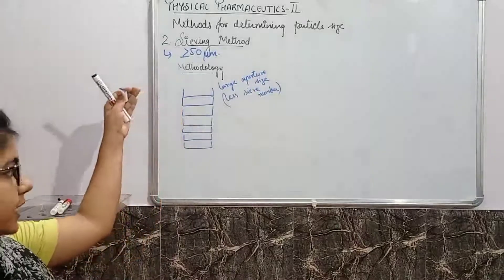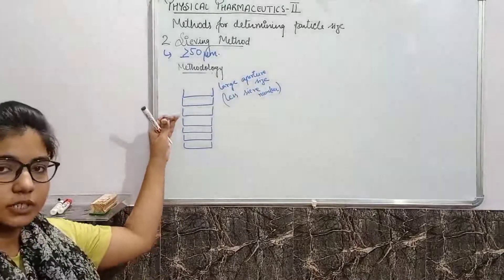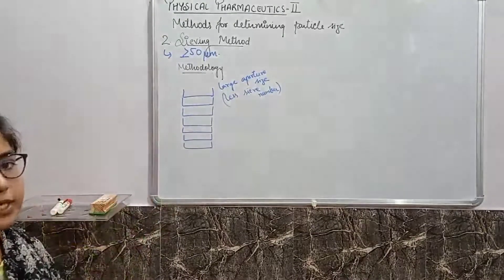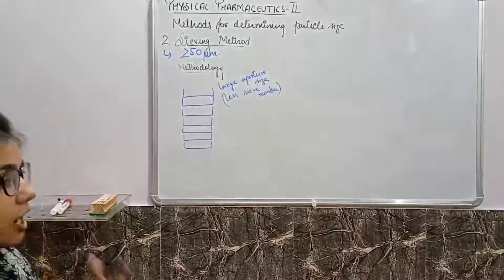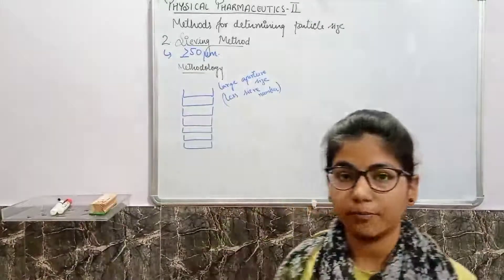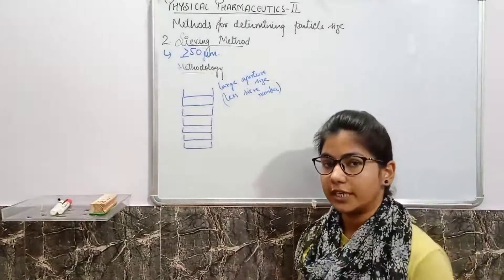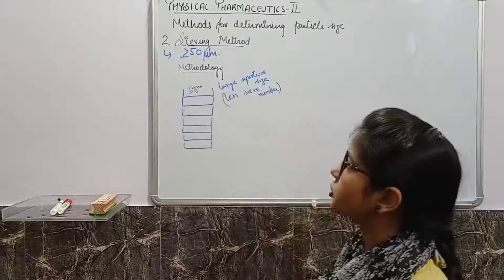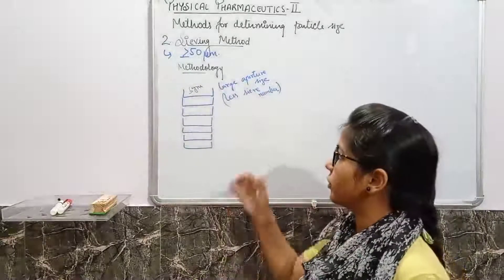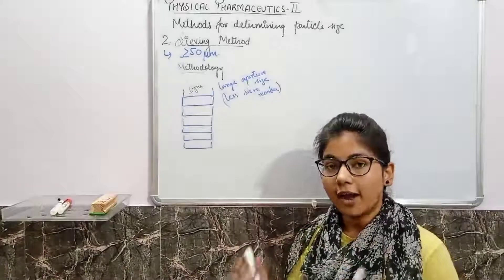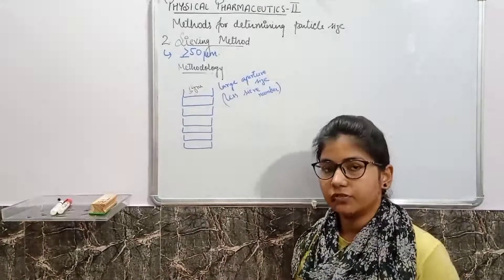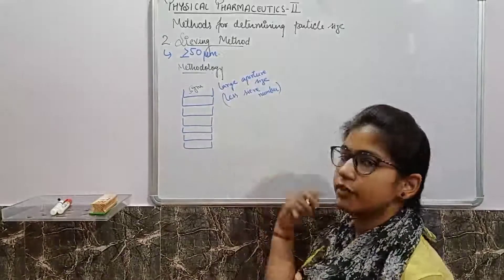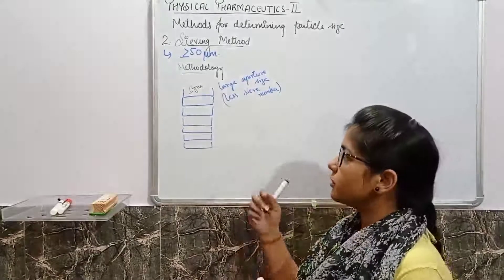The sieve with the highest sieve number is at the bottom, and we place the sieves in descending order of aperture size. For example, if you have to take 5 grams of sample, you place it on the top sieve and shake the entire stack either manually or by using a mechanical shaker.